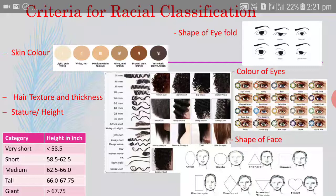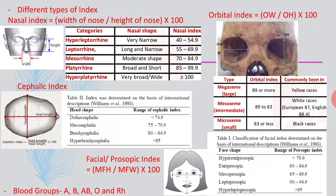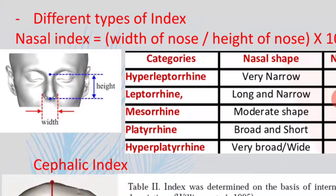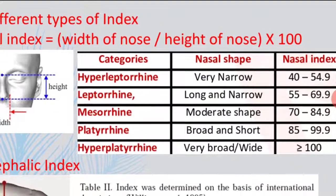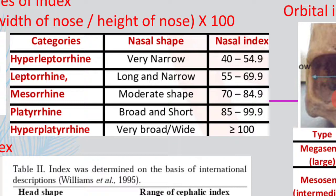These are the criteria which are observable at first sight. Then in the next slide I am giving some of the indices often used for racial classification. The first one is the nasal index, which uses the length, height and width of the nose. The width of the nose is divided by the height and multiplied by 100. This gives five categories: hyperleptorine (very narrow), leptorine (long and narrow), mesorine (moderate), platerine (broad and short), and hyperplaterine (very broad and wide).